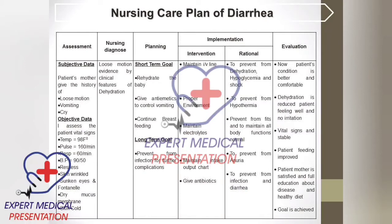Blood pressure equals 90/50. Restless, skin wrinkled, sunken eyes and fontanelle, dry mucous membrane, skin cold. Nursing diagnosis: loose motion evidenced by clinical features of dehydration.